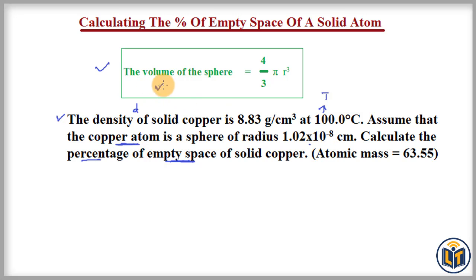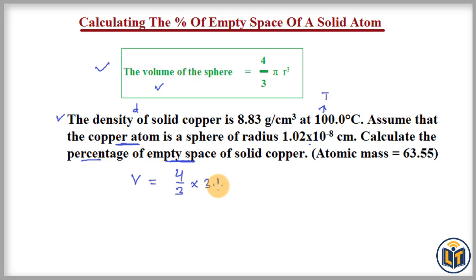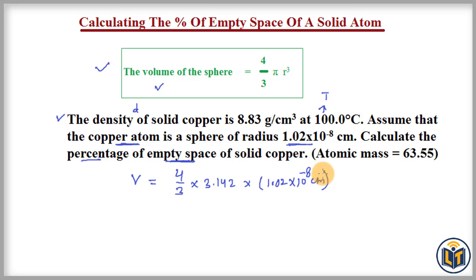We apply the sphere volume formula to calculate the volume of one copper atom. Volume = (4/3) × π × r³, where π is 3.142 and r is 1.02 × 10⁻⁸ centimeters. We can simplify this and find the volume of a single copper atom.